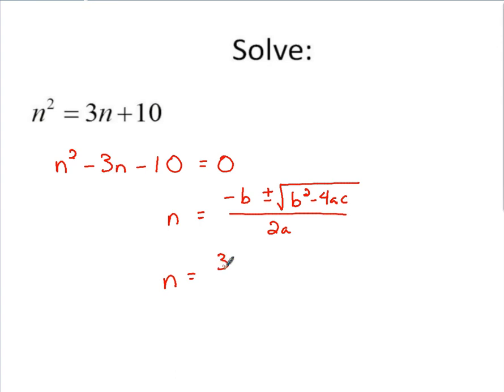Plus or minus square root of, it's negative 3 for b squared minus 4 times a, which is 1, times c, which is negative 10, all over 2 times a, 2 times 1.